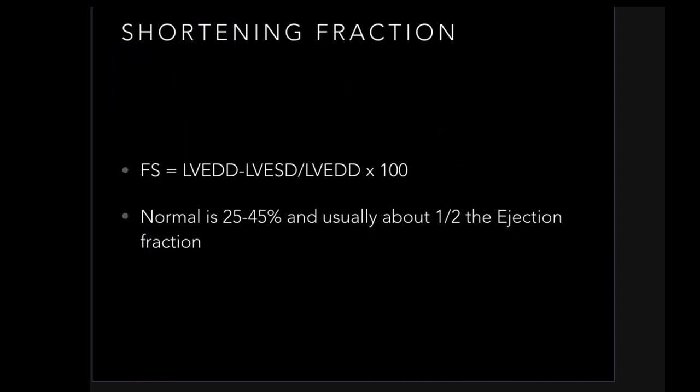In pediatrics you get the shortening fraction. It would show up on pediatric echo reports — when I was a resident all pediatric echoes reported shortening fraction. Shortening fraction is not the same as ejection fraction — normal is 25 to 45 percent, roughly about half the ejection fraction.